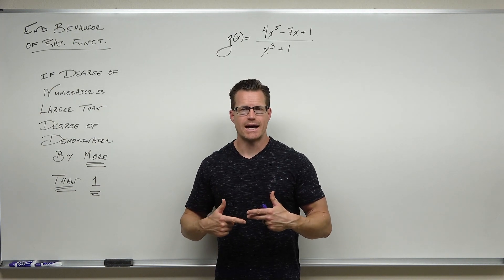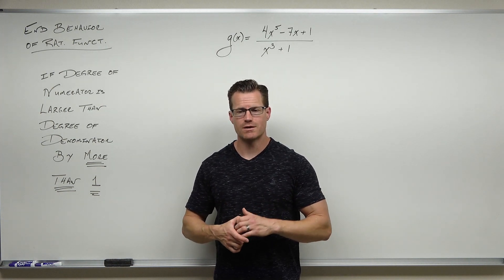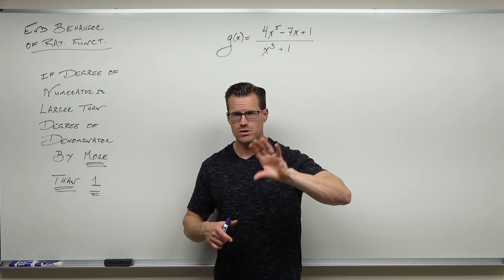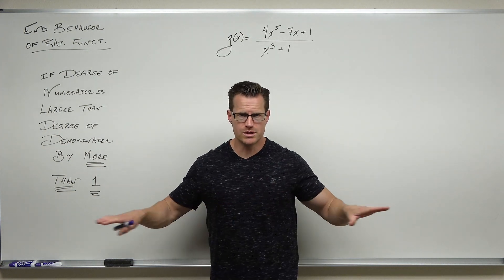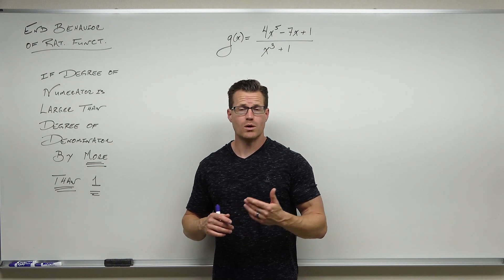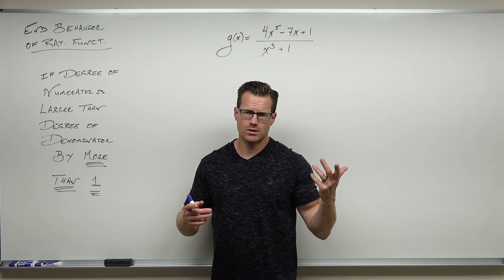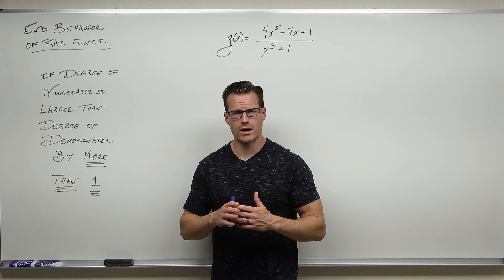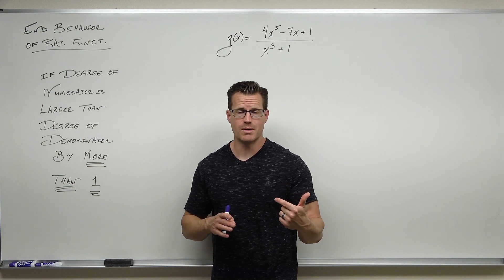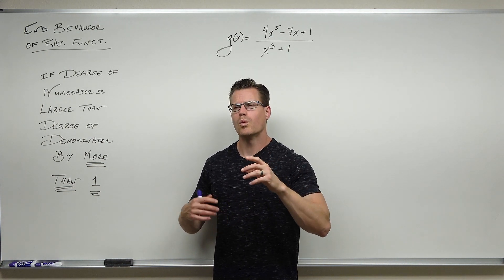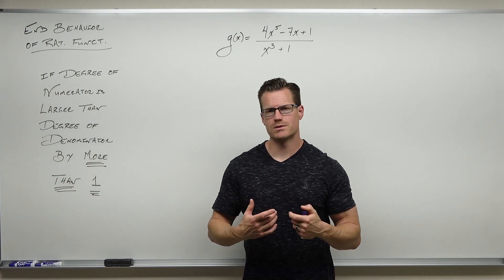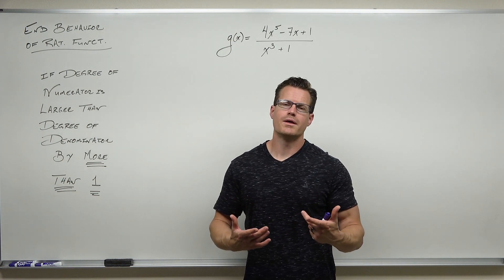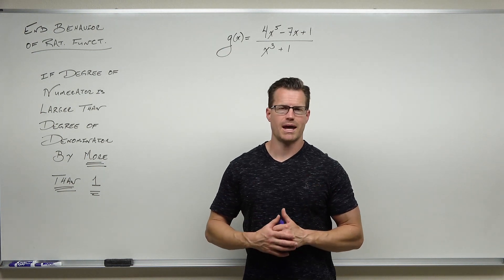Well, a horizontal asymptote we know happens when the degree of the denominator is equal to the numerator or bigger than the numerator. You're going to get constant or zero, respectively. We know that an oblique asymptote, sometimes called a slant or diagonal asymptote, happens when the degree of the numerator is larger than the degree of the denominator, but by only one. Well, what if we have the degree of the numerator larger than the degree of the denominator by more than one? Then we're just going to get some straight up end behavior.